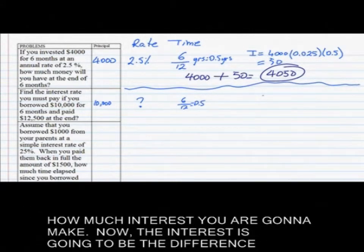Let's do another one. Find the interest rate. This time, they are not giving you the interest rate. Find the interest rate you must pay if you borrow 10,000. So 10,000 is your principal. For 6 months, the time is 6 over 12, which is 0.5 years. Now, how am I going to get the rate? They are not giving you the I. They are giving you the P.